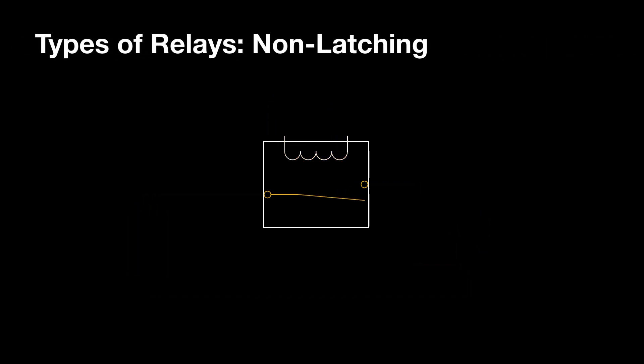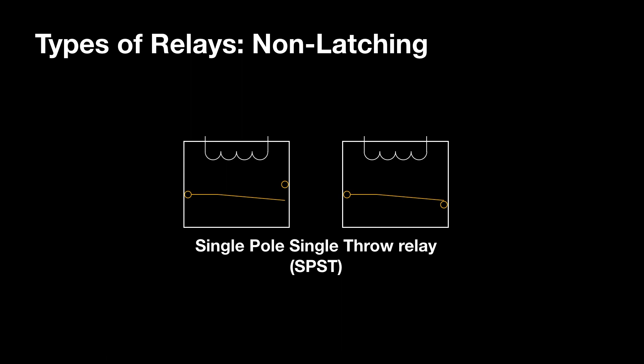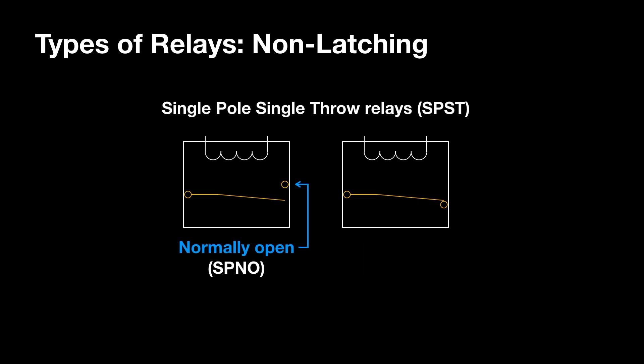This particular type of relay is known as a single-pole, single-throw, or SPST relay, because it consists of one pole and one contact for which the armature can be thrown onto. There are two variations of the SPST relay. The first on the left is the normally open variant, or SPNO. On the right is the normally closed, or the SPNC variant.